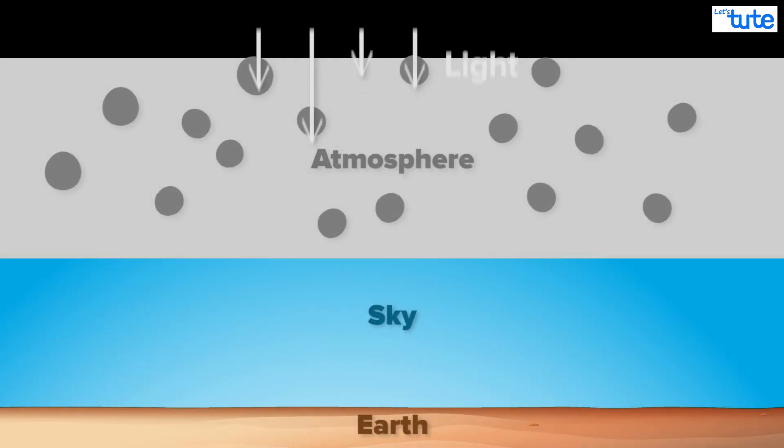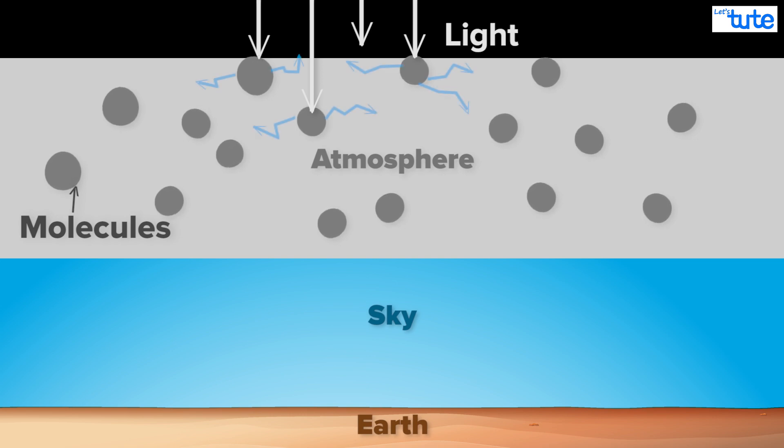See when light hits the atmosphere, they interact with the molecules of air. Light of shorter wavelengths like blue cannot dodge these particles well and so it hits them and gets reflected in some other direction randomly.